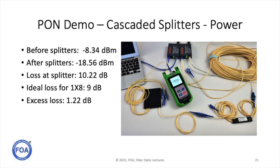The ideal loss for a 1x8 splitter is 9 dB — that's 3 dB for each factor-of-2 split, three times. So the excess loss of the splitters in this particular link is 1.22 dB. We tested the power level, measured the loss across the splitters, and determined the excess loss to confirm the splitters are performing correctly.